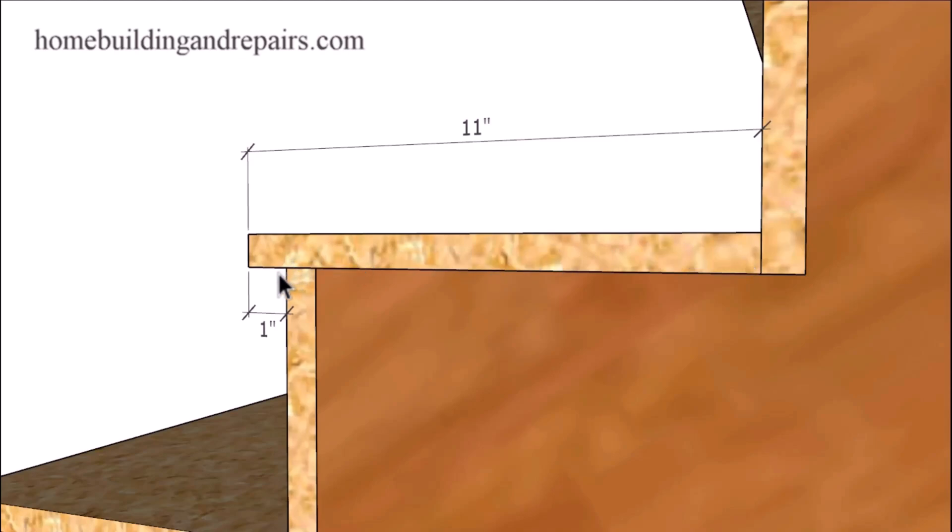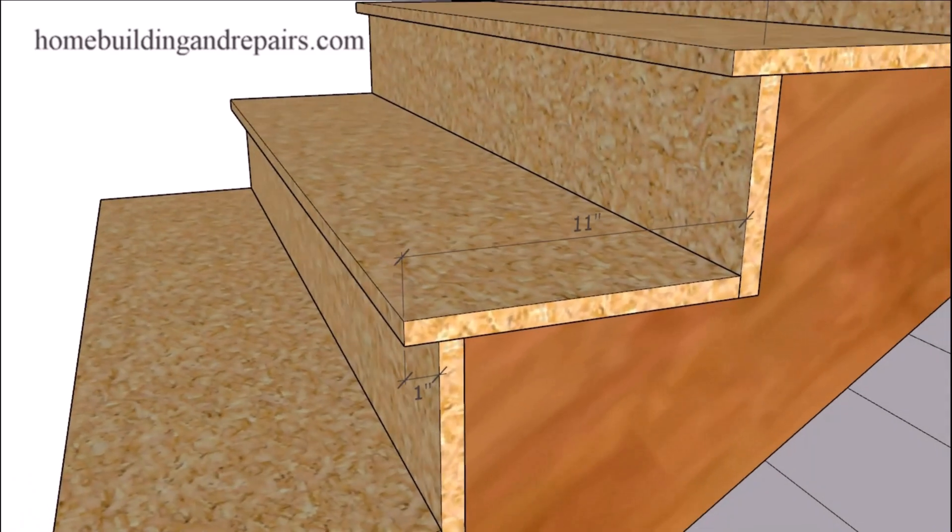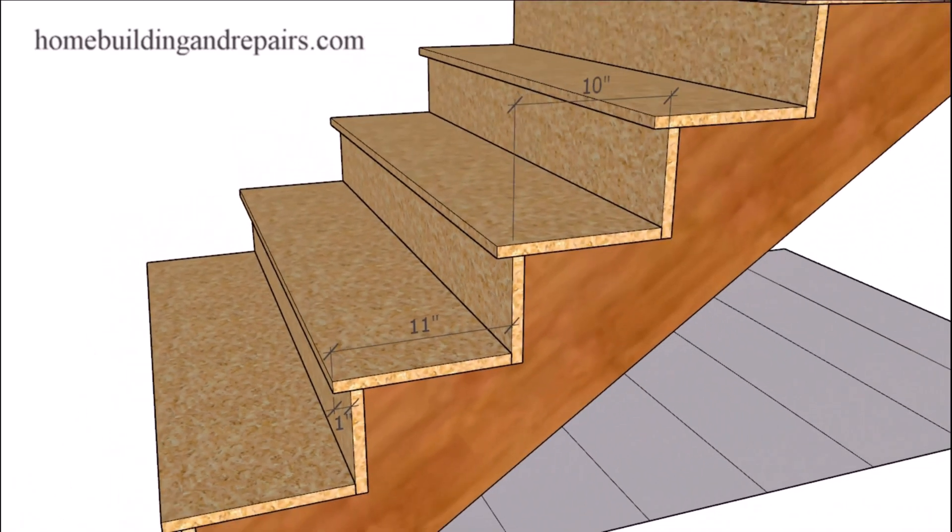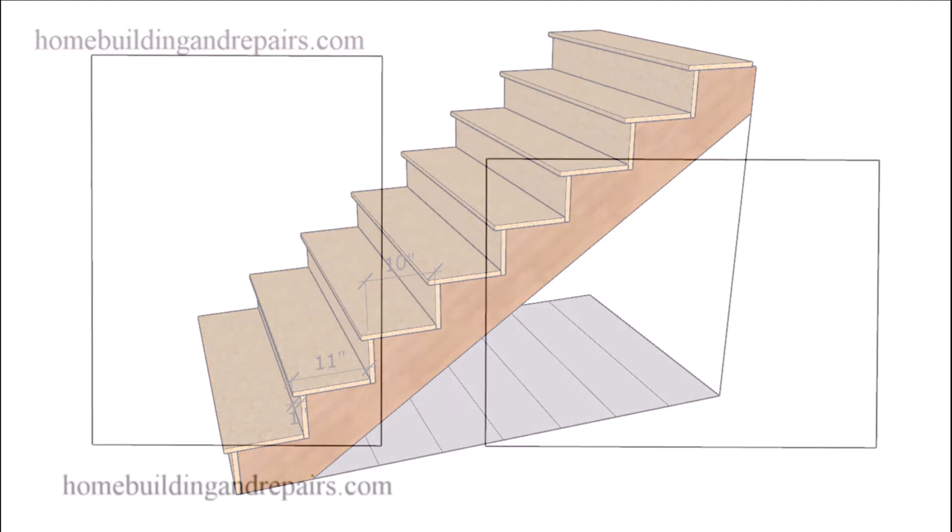Instead of a 10-inch tread, I'm going to add an inch to it, the length of the nosing to the depth of the individual tread run. In this example, 10 inches. So again, I'm not going to modify the stair stringer for the nosing. And this is what a lot of do-it-yourselfers seem to do. I've seen it plenty of times and hope that you don't end up repeating the same mistake.